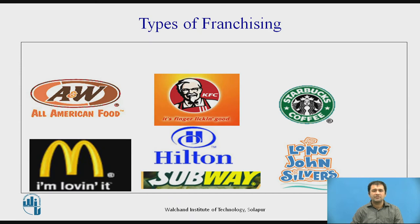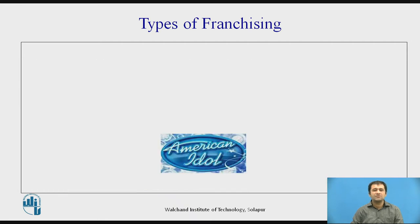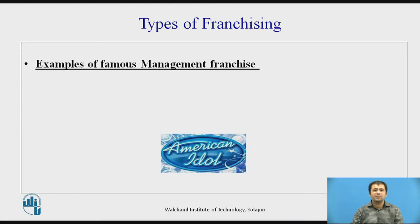McDonald's, Hilton, KFC, Subway, Starbucks Coffee, and Long John Silver are famous examples of business format franchise. This type of franchisee is much more powerful because the entire business is being franchised. We all know the success stories of McDonald's, KFC, and Starbucks Coffee. The franchisee is doing very good business not only in India but in every corner of the world. The last example is American Idol, which is a famous management franchisee.